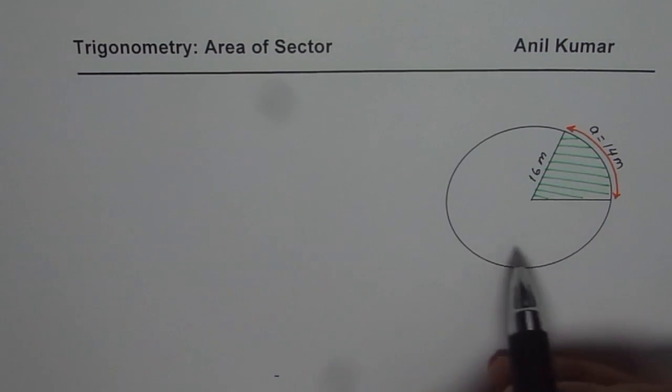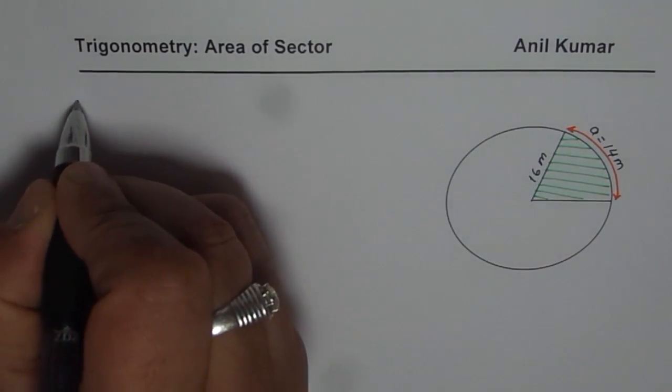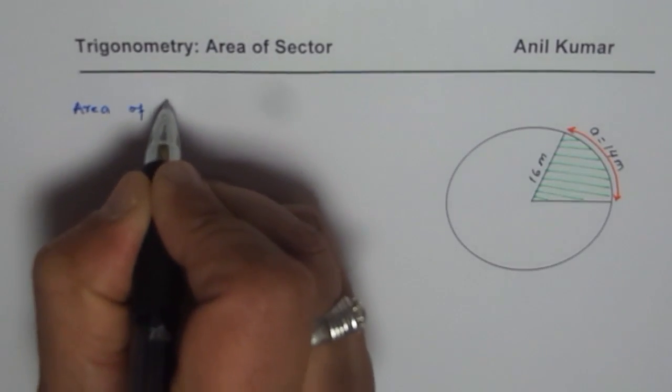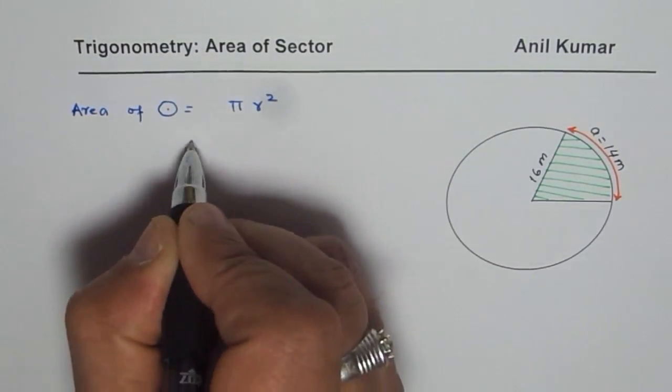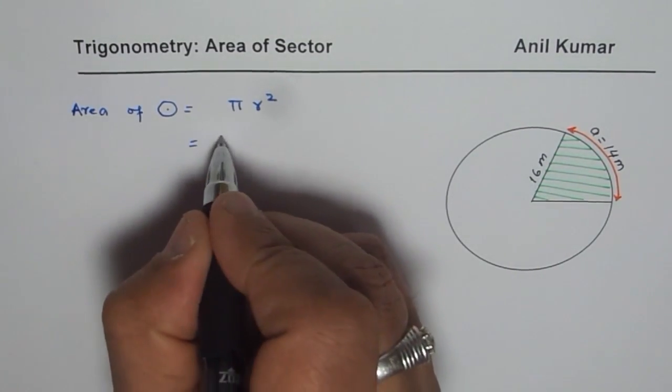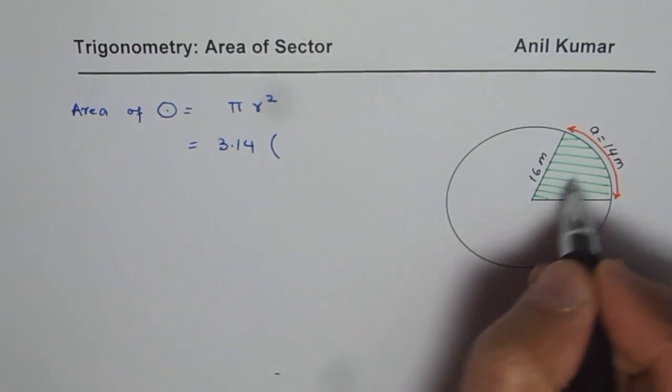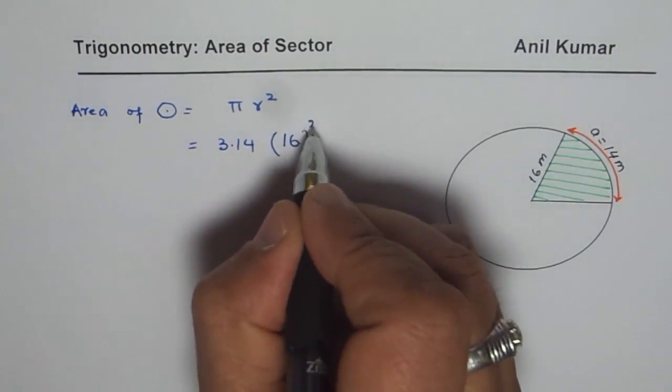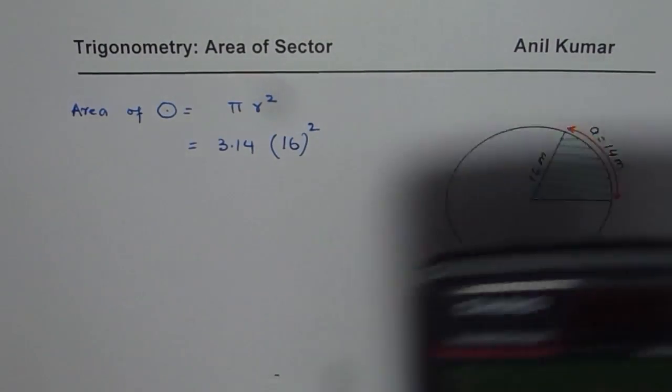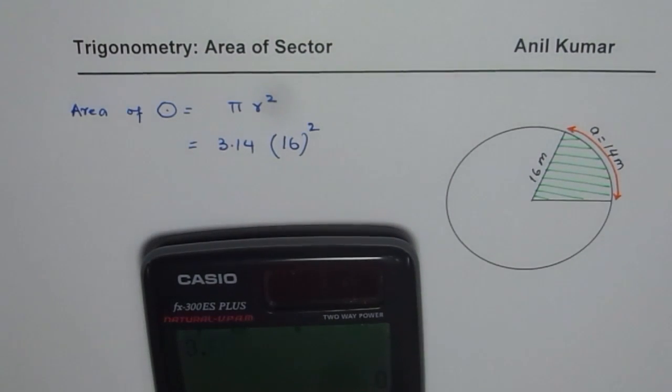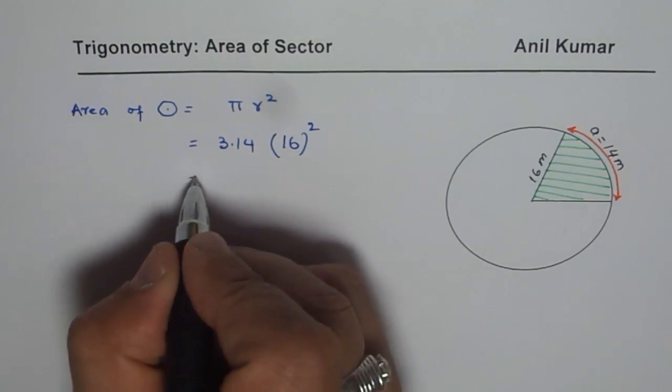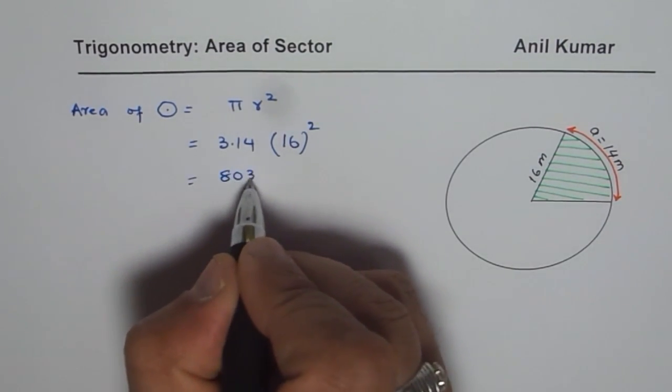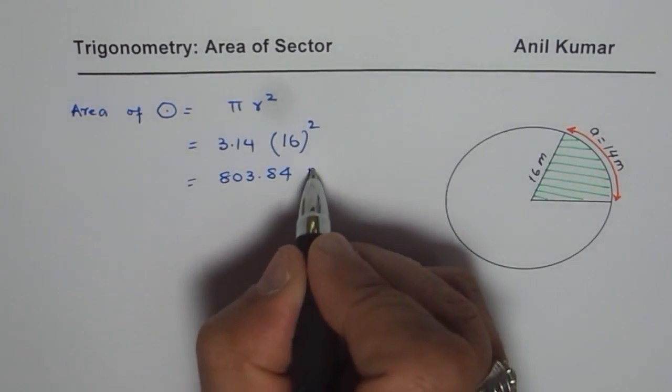Now first find area of the full circle. Area of full circle equals pi r squared as you know. Approximately we can take 3.14 as value of pi. Radius in this case is 16, 16 squared. Using calculator we can get the value 3.14 times 16 squared equals 803.84 meters squared.